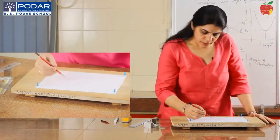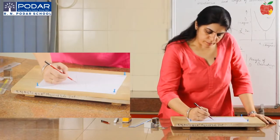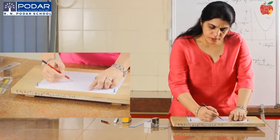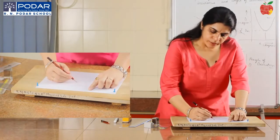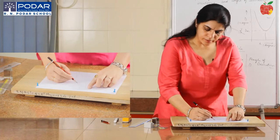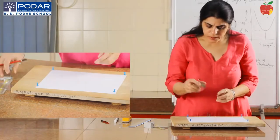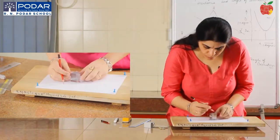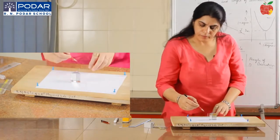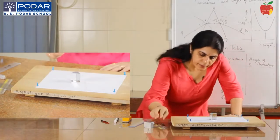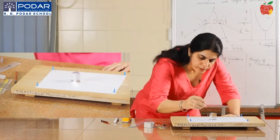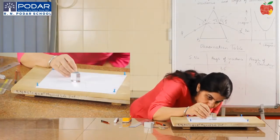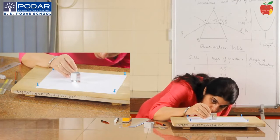Now mark an angle of incidence from the normal — here I've taken 35 degrees — and draw the incident ray along that line. Place two pins on this incident ray. Then take the prism and trace the outline of the prism, with one refracting surface facing the incident ray. Take a third pin and position it so that you see the images of the two pins on the incident ray and the third pin all lying in the same straight line.